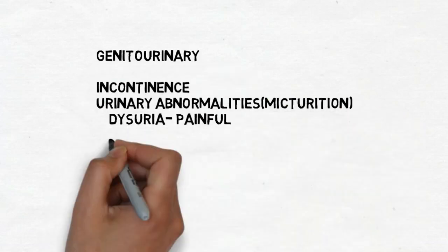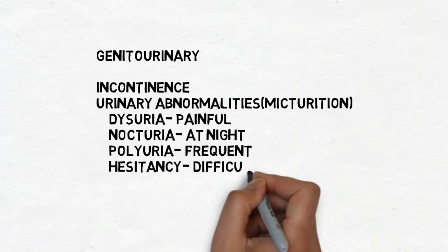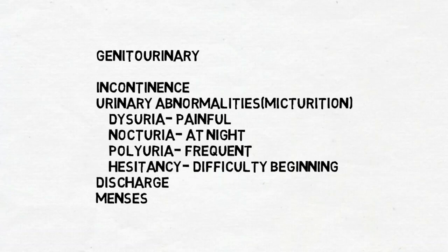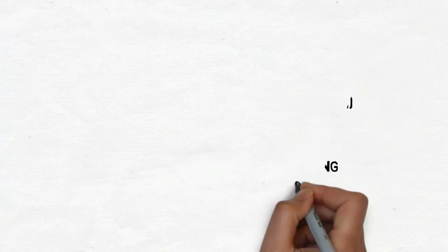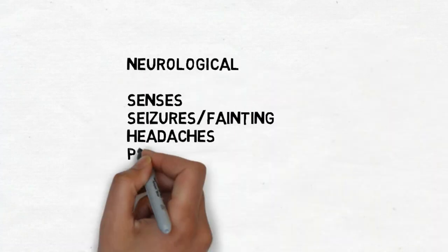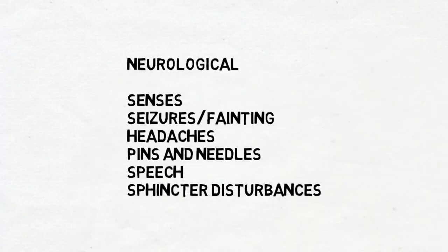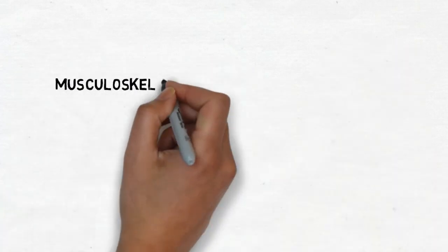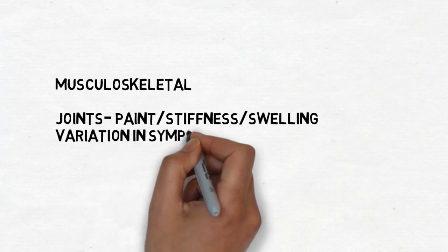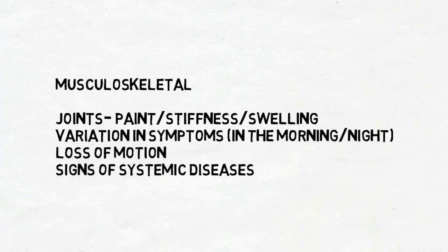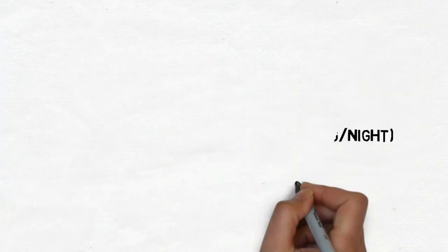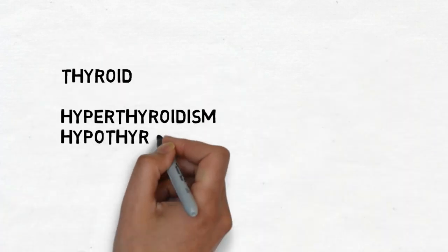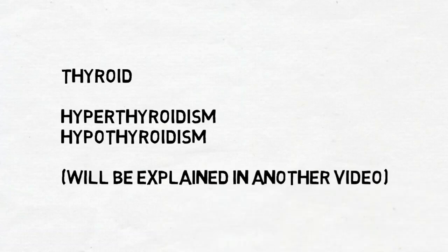Genitourinary symptoms can be asked about when relevant. There are also neurological symptoms to consider — the patient might be experiencing unusual smells or tastes, fainting, or blacking out. Finally, musculoskeletal symptoms: swelling of the joints, systemic disease signs, rashes, mouth ulcers. You could also ask about thyroid symptoms — hyper or hypothyroidism.